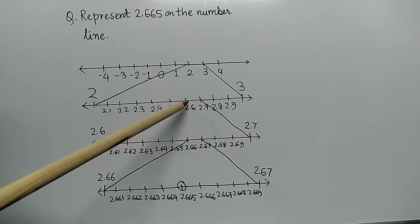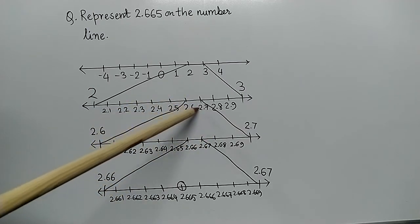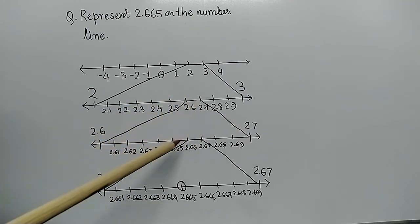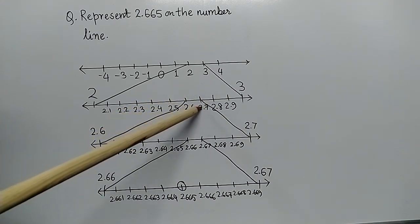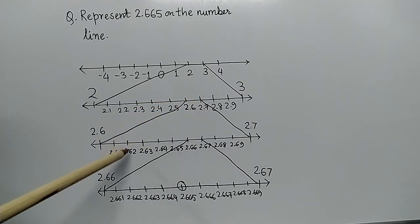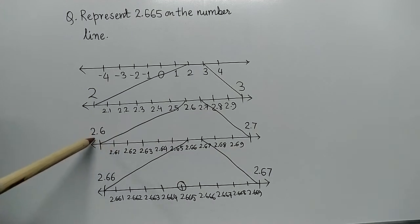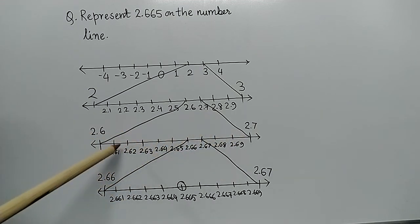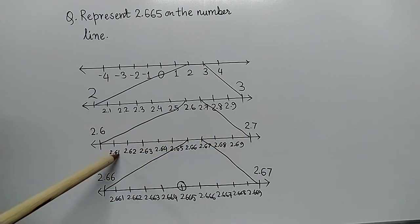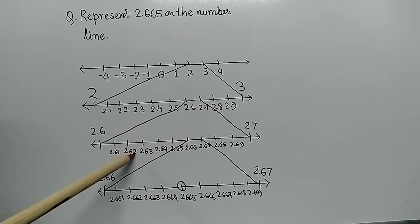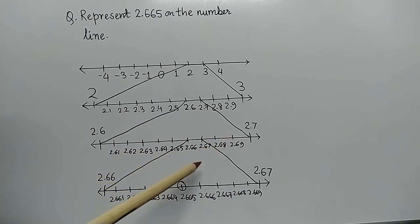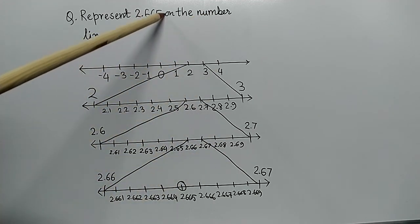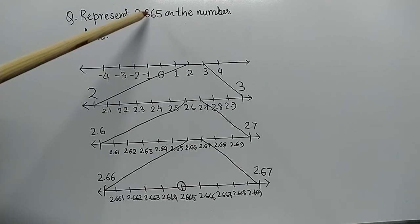We have to find the numbers between 2.6 and 2.7, so we magnify this portion again. Between 2.6 and 2.7 we get numbers such as 2.61, 2.62, 2.63, 2.64, 2.65, and so on. We still won't stop here because we haven't reached our number yet — that is 2.665.